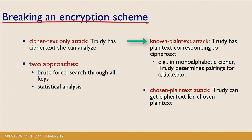Another option is a known plain text attack, which assumes that Trudy has plain text corresponding to the ciphertext. For example, in a monoalphabetic cipher, Trudy might determine the pairings for the letters A, L, I, C, E, B, O, and that could give her a start at figuring out what letters have been used to replace those letters, which she could then work from to try to decrypt the entire message. She could also use a chosen plain text attack, where Trudy can get ciphertext for a chosen piece of plain text, and use those in combination to try to figure out the encryption scheme and how to break it.